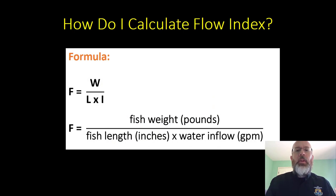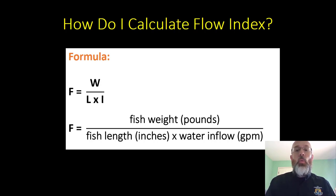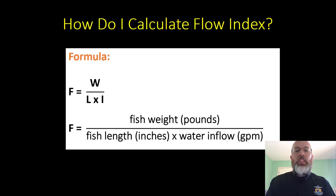Here's the formula for calculating flow index by hand: F equals W divided by L times I. F is the flow index. W is the fish weight in pounds — all of the fish in that raceway. L is the fish length in inches. And I is the inflow, or the gallons per minute of water that are entering that raceway.